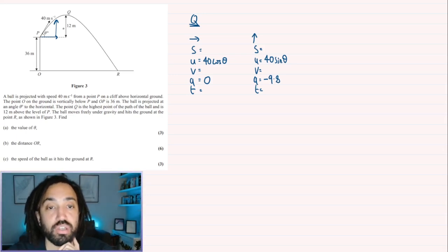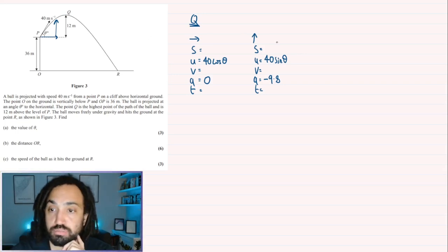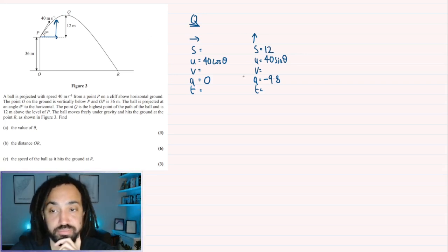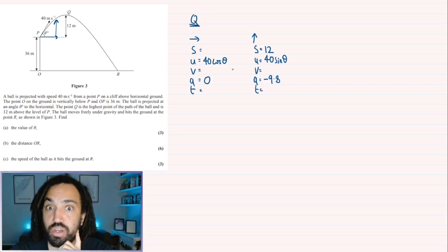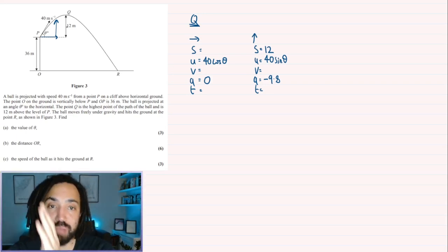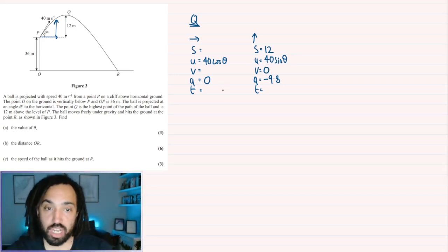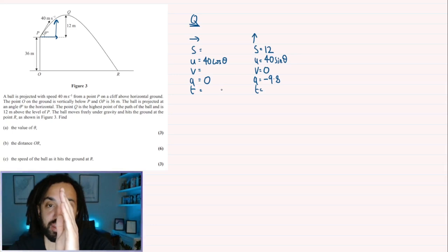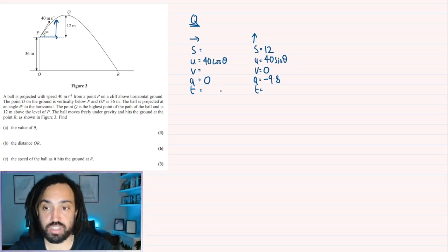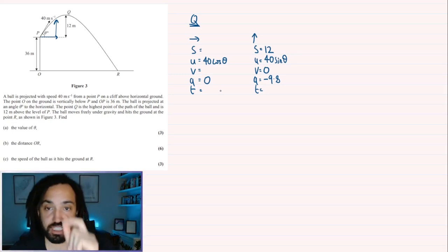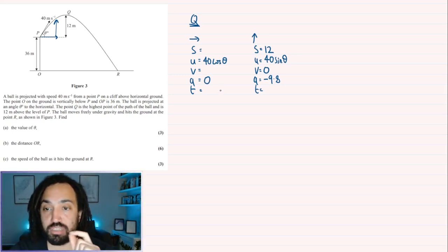Now what's happening at Q? Well, I know at Q it's travelled 12 metres in the vertical. So I can put 12 in here. And I also know that at the maximum point, the highest point, the velocity must be zero. Because it's going upwards with speed and then it gets to the maximum point and then it starts going downwards. So the velocity changes from positive to negative which means it must be zero at that point right at the top.